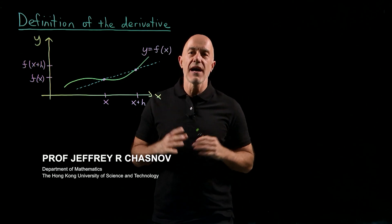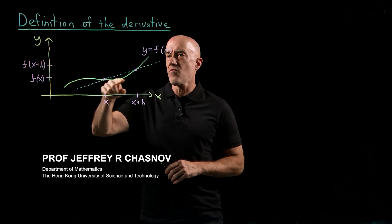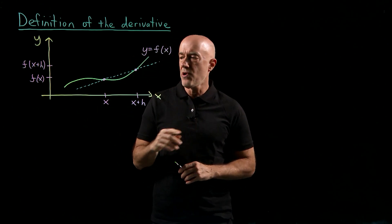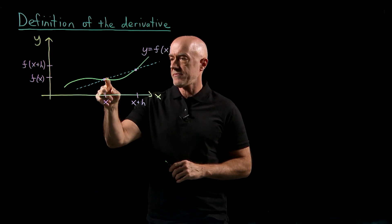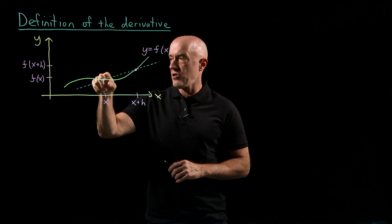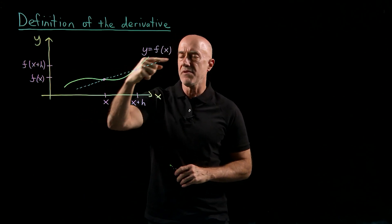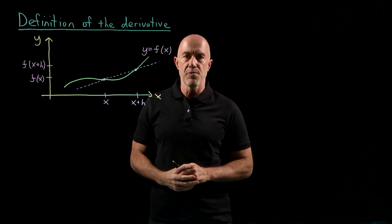We're ready now to define the derivative. Let's consider a function y equals f of x. We take two points, one at x, one at x plus h, and look at f of x and f of x plus h, and we draw the secant line between these two points, so the straight line that goes through these two points.